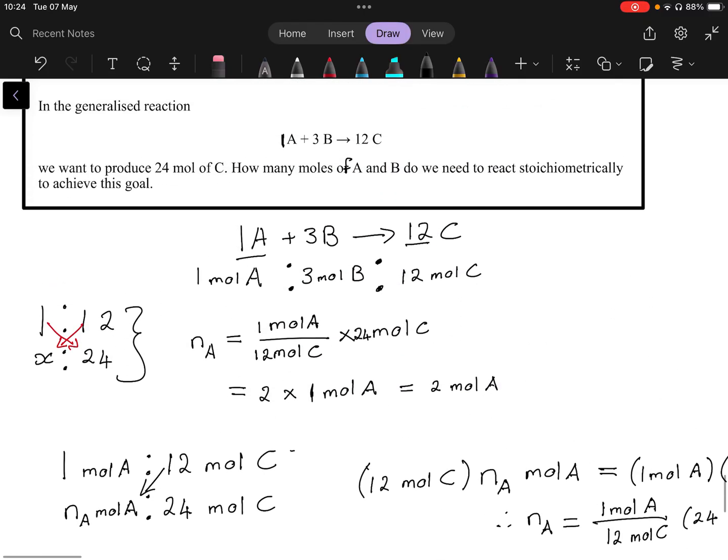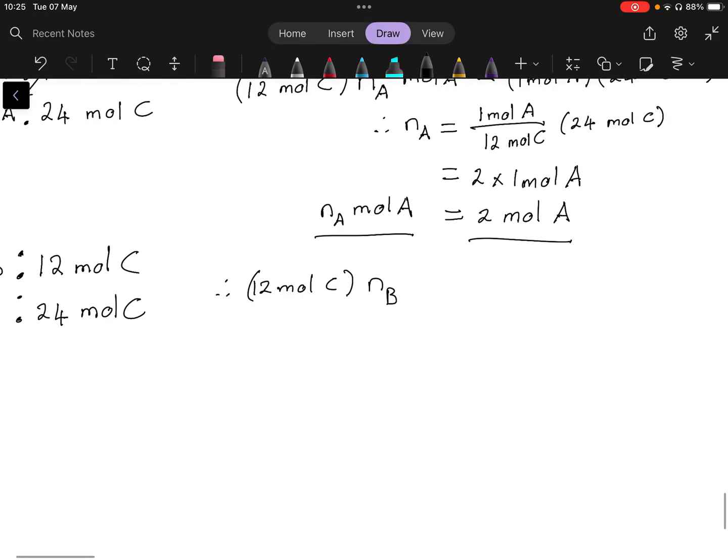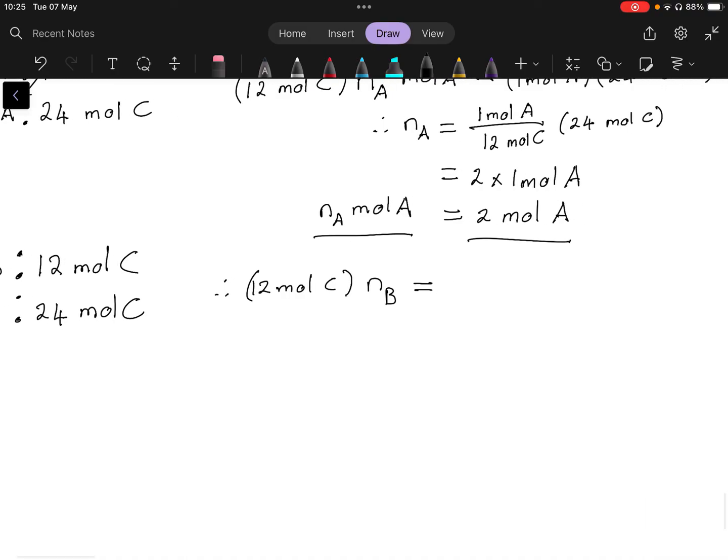Or however you want to write it. So that so that gives us how many moles of A we want. So let's do the same for B. This is now 3 mole of B, so 3 mole of B gives us 12 mole C. But how much do we want? We want 24 mole C and we want the number of moles of B.